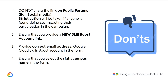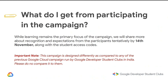Do not share your link on public forums like LinkedIn or Instagram — quick action will be taken if anyone is seen doing this. Each campus gets a different link, so Amrita School of Engineering Bangalore will only take students from this college, making sharing on other platforms pointless. Ensure you provide a new Skill Boost account link, correct email address, and make sure you select the right campus name — there are three GDSCs with Amrita School of Engineering, so don't make a mistake.